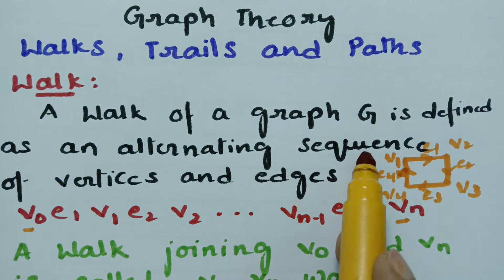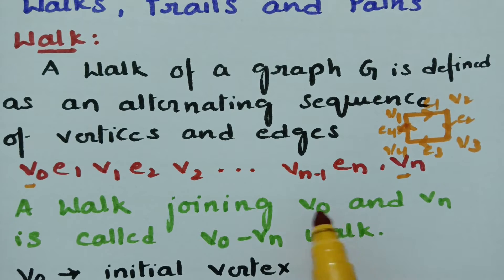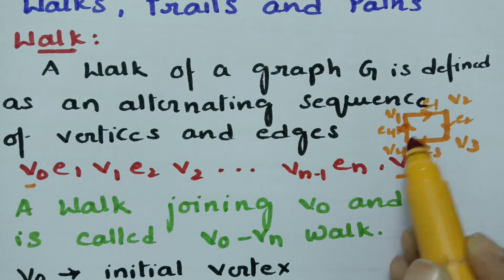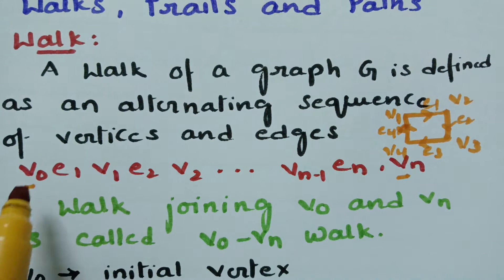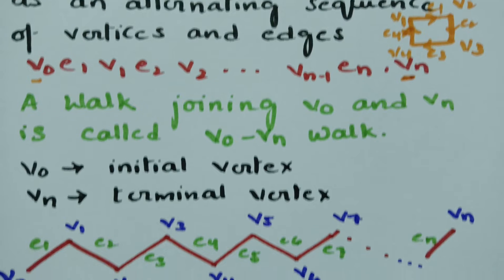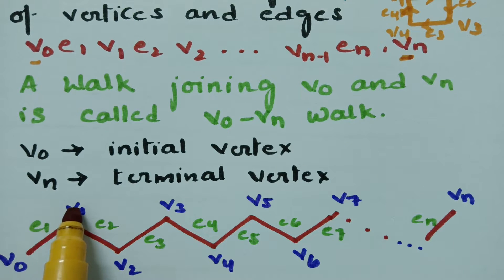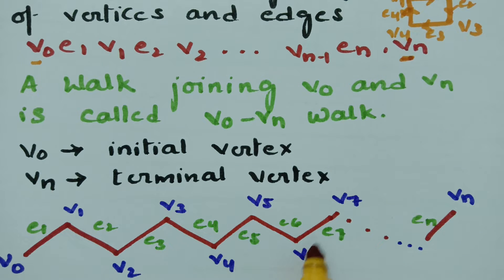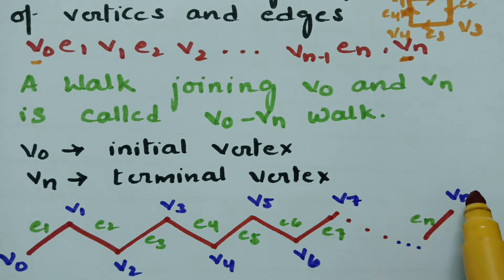In an alternating sequence, we have to take the vertices and edges. A walk joining V0 to Vn is called a walk — whatever the walk we have done from the starting point till the ending point. The first vertex is called the initial vertex and the final vertex is called the terminal vertex.